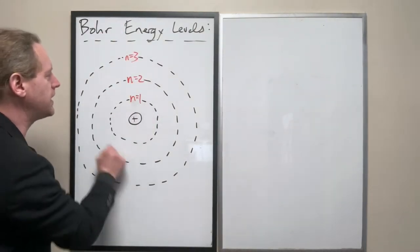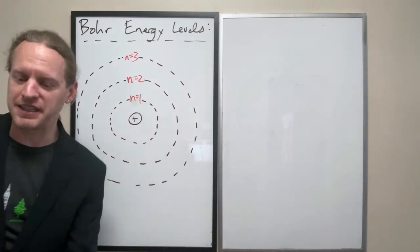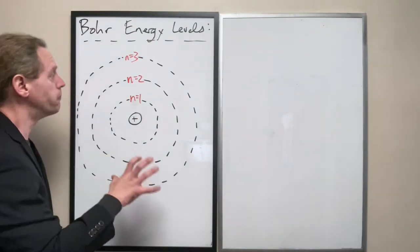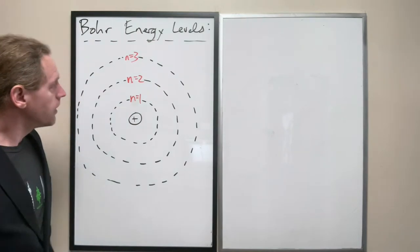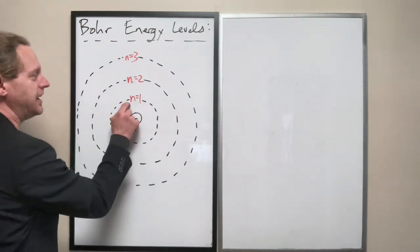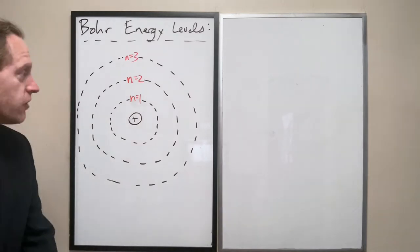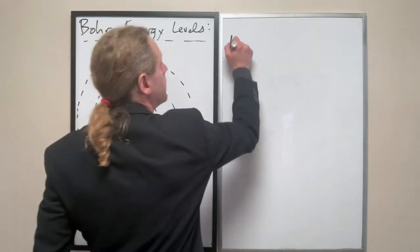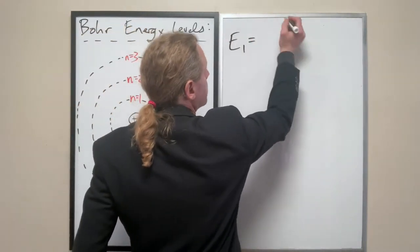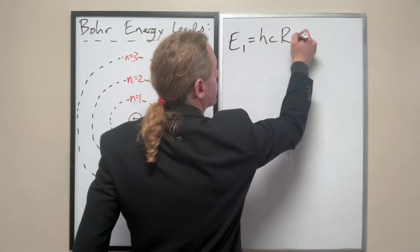As it turns out, the way that he diagrammed this is absolutely not how the electron works, but we'll pretend it is for now. So what he said is that if that electron is going around in level 1, the energy of level 1 is simply HCR, or HCR0.